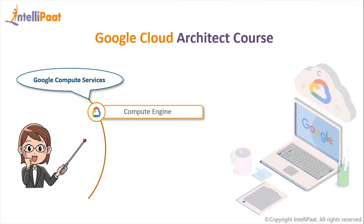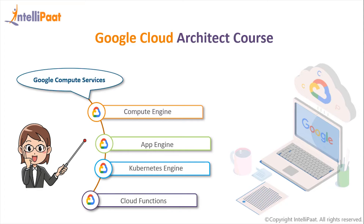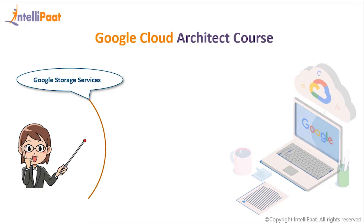The first compute component is Compute Engine, which allows you to create your own virtual machine by allocating hardware-specific resources such as RAM, CPU, and storage — it is hands-on and low-level. The second is App Engine, which lets you focus only on your code while Google handles all the underlying platform requirements. Third is Kubernetes Engine, which allows you to use Kubernetes and containers to manage your application and scale it whenever needed. Finally, Cloud Functions is the last step in the compute pyramid, allowing you to write a simple function.